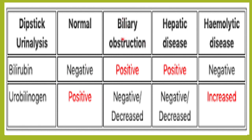In biliary obstruction, there is a blockage to bile flow so bilirubin cannot enter the intestine, meaning urobilinogen cannot be formed — urobilinogen will be negative. Because of the obstruction, conjugated bilirubin levels increase and spill over into the urine, making urine bilirubin positive.